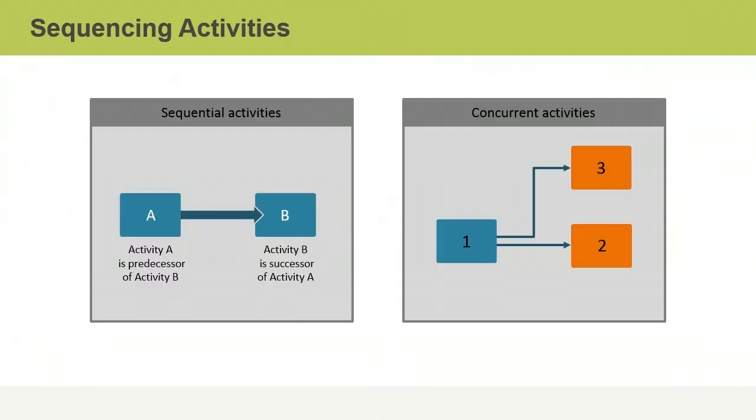Except for the very first and last activities a team performs in a project, every activity will have another activity before it and one after it. A predecessor, block A, is an activity that starts before another activity. And a successor, block B, is an activity that begins after another activity.